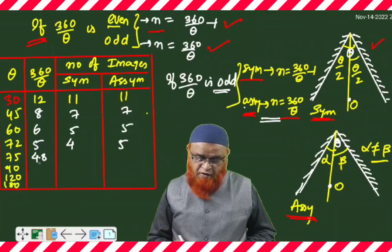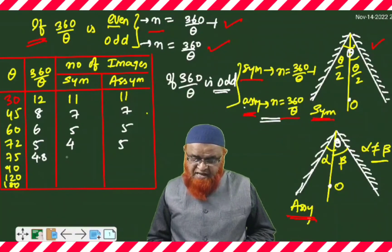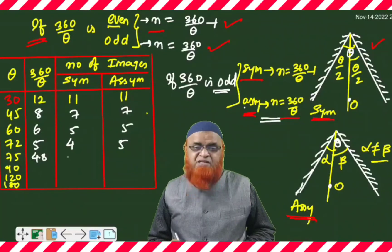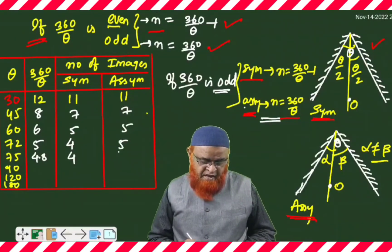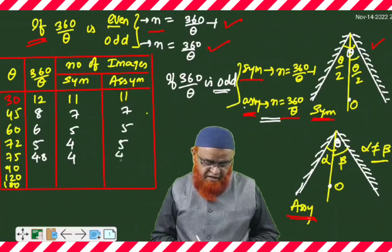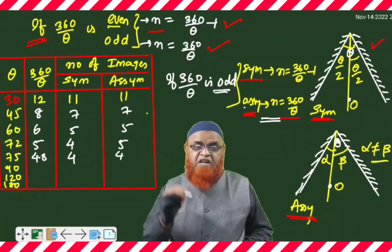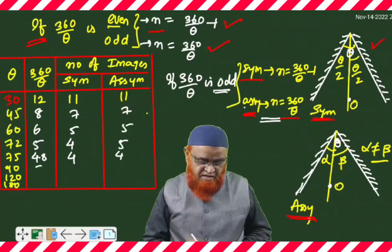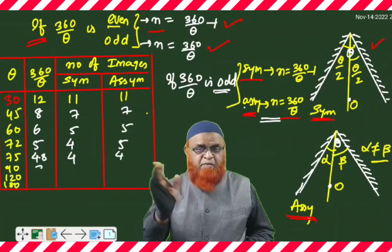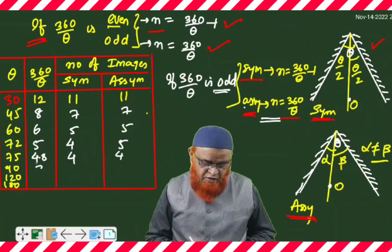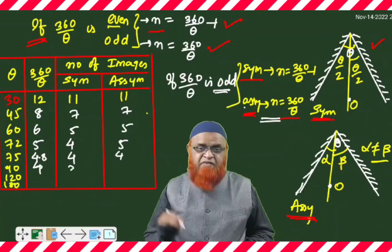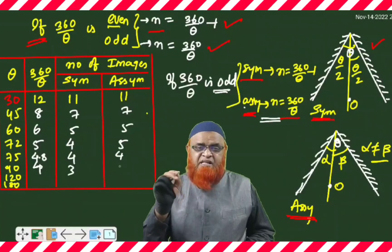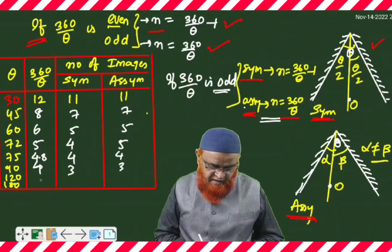For 75 degrees, 360 divided by 75 gives 4.8, so the fifth image doesn't form; therefore you get 4 images in both cases. For 90 degrees, 360 divided by 90 gives 4, which is even, so the answer is 3 and 3 — no sub-conditions since it is even.